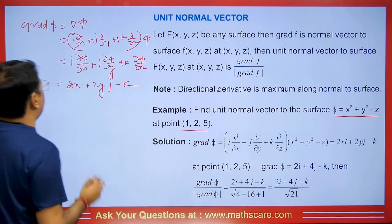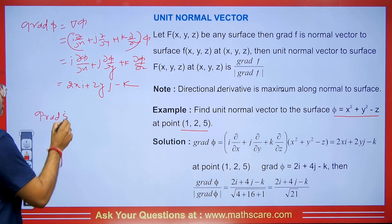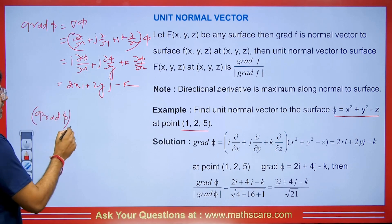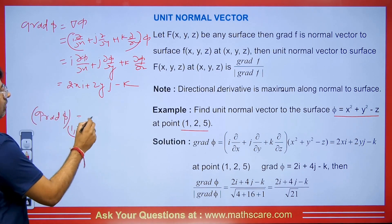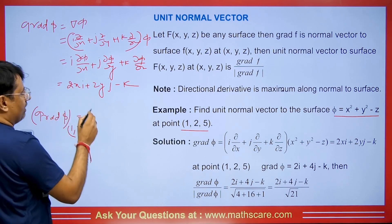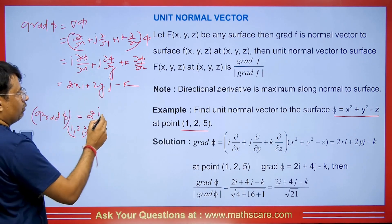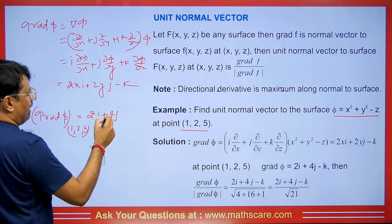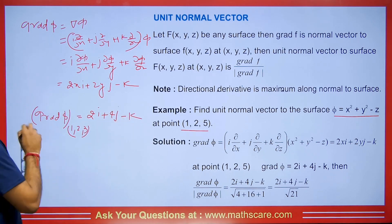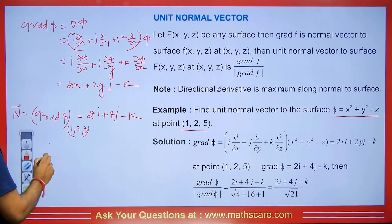Taking the derivative with respect to z gives minus 1, so it will be minus k. We have got grad phi. Now we need to find it at the given point. The gradient of phi at point (1, 2, 3): wherever there is x put 1, so it becomes 2i; wherever there is y put 2, so this becomes 4j; and this comes as minus k. This is our normal vector.